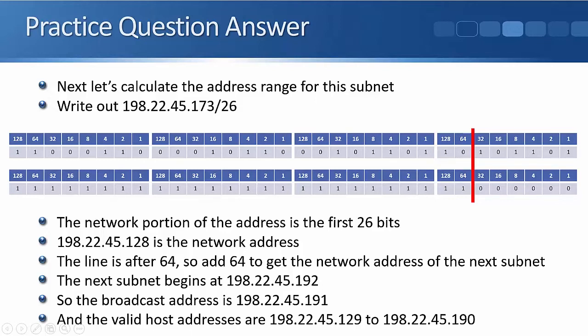This is a second way that we can figure out the answer — I'll get to that in a moment. First, the long way: we write out the IP address and the subnet mask in binary notation and put in the line where the subnet mask boundary is. From that we can figure out that the network address is 198.22.45.128.